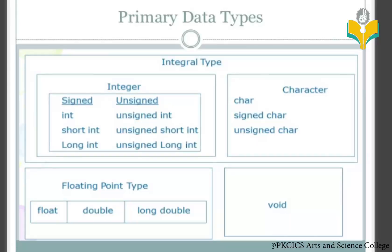To declare a character, 'char' is the keyword. We have signed char and unsigned char as the declarations for character types. For floating types, 'float' is the keyword.